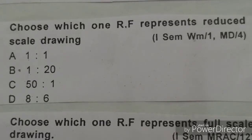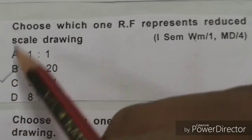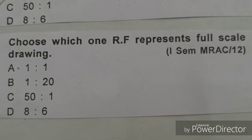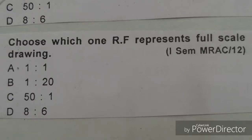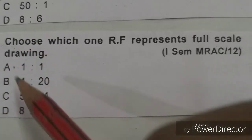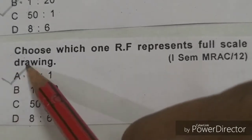Choose which one RF represents full scale drawing. Options are 1 to 1, 50 to 1, 8 to 6. So full scale is A. 1 to 1 is the correct answer.